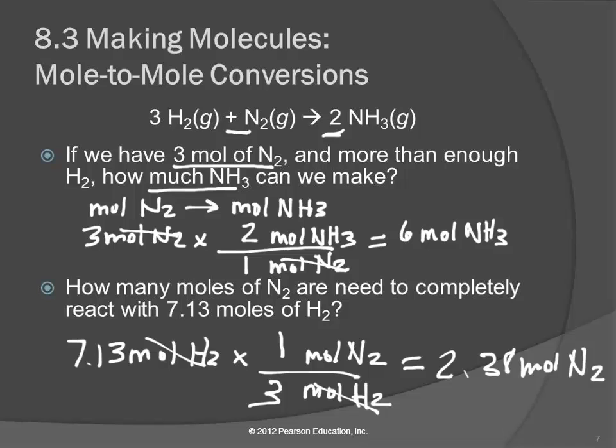How did I get the three moles of hydrogen? From the balanced chemical equation. Three moles of hydrogen are needed to react with one mole of nitrogen.